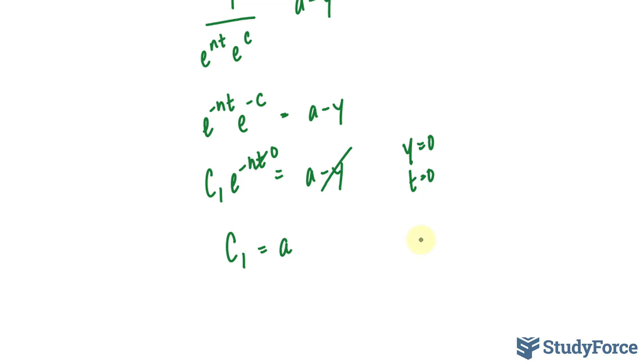Therefore, our equation becomes a minus y is equal to a e to the power of negative nt, which of course can be rewritten if we bring this y over and this over as a minus a e to the power of negative nt is equal to positive y.